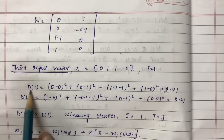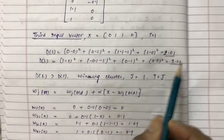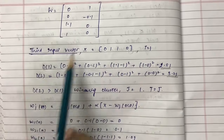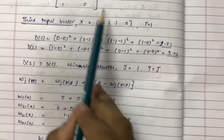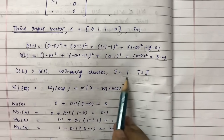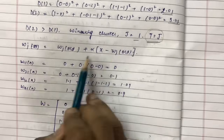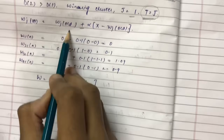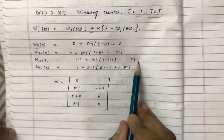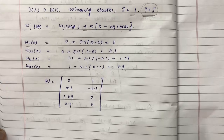For the third input vector, d1 is calculated as (0-0)² + (0-1)² + (1.1-1)² + (1-0)² = 2.01, and d2 is calculated as (1-0)² + (0.9-1)² + (0-1)² + (0-0)² = 3.21. The winning cluster is 1. Here the target value equals the winning index, so we apply the plus sign update: w_j(new) = w_j(old) + alpha * (x - w_j(old)). The final weight matrix values are [0, 0.1, 1.09, 0.9] for y1.